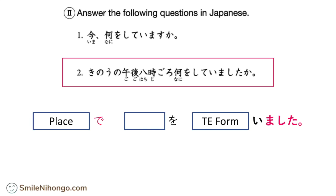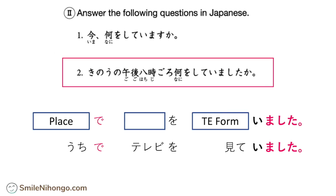For example, if you want to say 'I was watching TV at home,' then you have to say: うちで、テレビを見ていました. Can you tell me what you were doing around 8pm last night? Provide your own sentence in Japanese in the comment area.